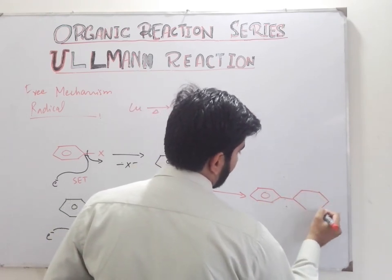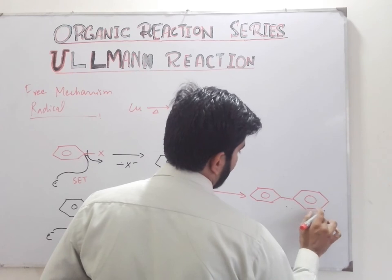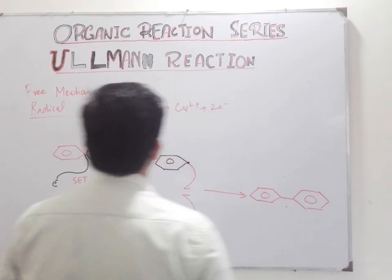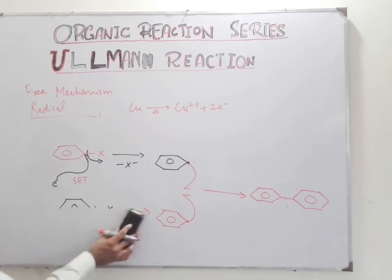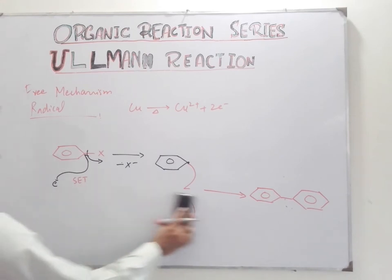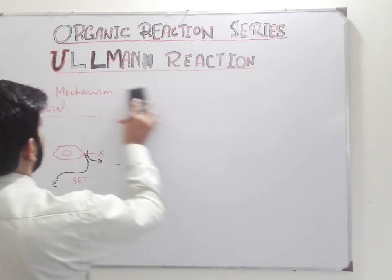So, biphenyl is formed from the aryl halides in the Ullman reaction. This is the free radical mechanism of the Ullman reaction. Now we discuss some examples of the Ullman reaction.